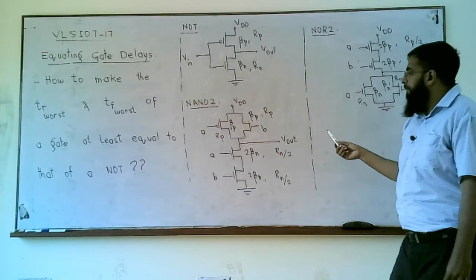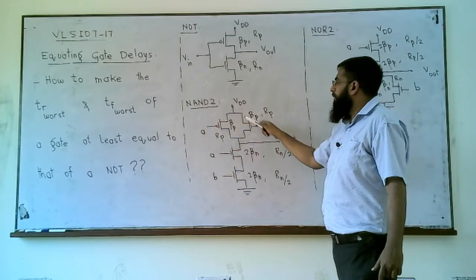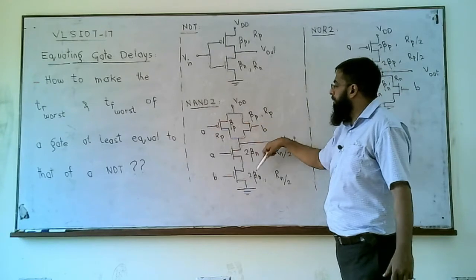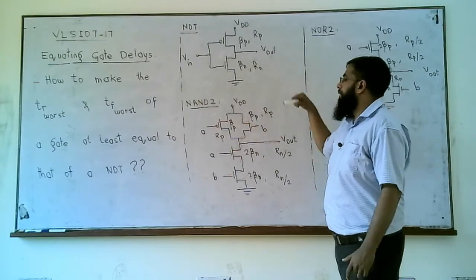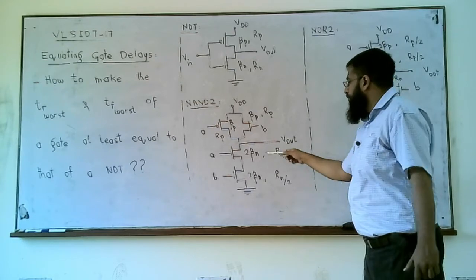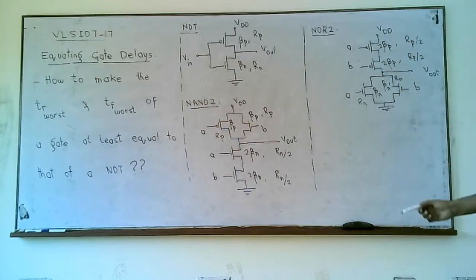Similarly, to equate the fall time delay of NAND2 equal to that of a NOT gate, we must use 2×beta_n — these two transistors must be double in size. Of course, that takes more space on the IC.